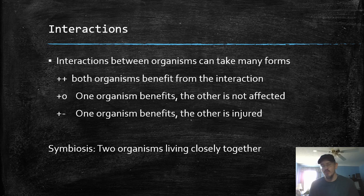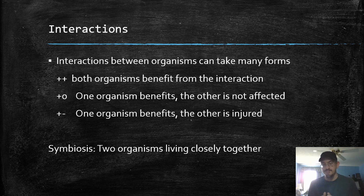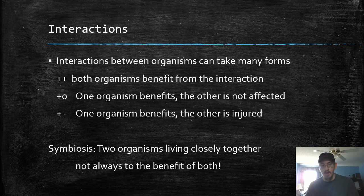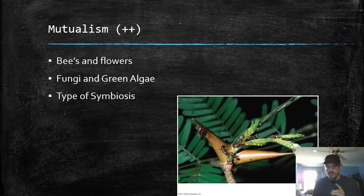One word I want to define here is symbiosis, because we often kind of misuse it. Symbiosis does not mean a plus-plus relationship — symbiosis could be a plus-plus, a plus-zero, or a plus-minus relationship. Symbiosis literally means two organisms living closely together. Here's an example of symbiosis that is beneficial — it's called mutualism. It's a plus-plus. This is when both organisms benefit — they come together and they both benefit.